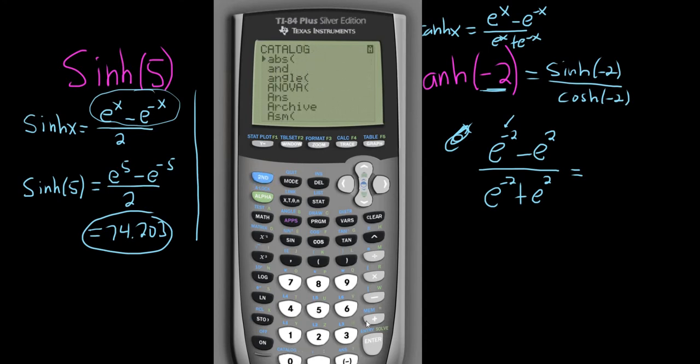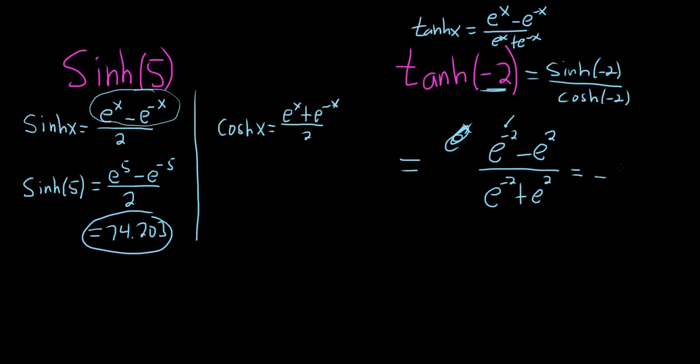So the letter t is right here where the 4 is. And there it is, tanh. Let's go to it. And then negative 2. And so there it is, 0.964. So this is equal to negative 0.964.